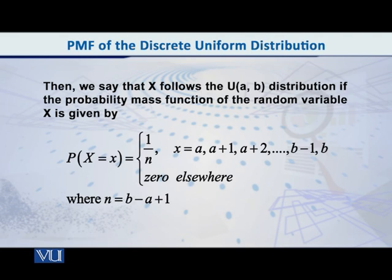If the pmf of the random variable x is given by the following. The probability that x is equal to x is equal to 1 by n, where x is equal to a, a plus 1, a plus 2, and so on, so on and so on, b minus 1, b.